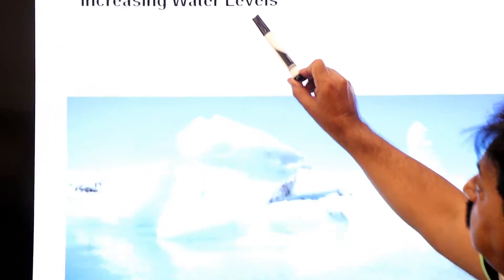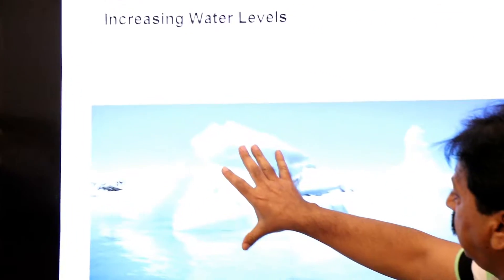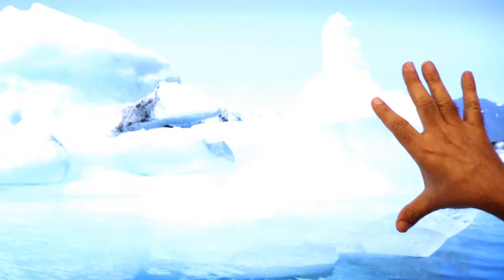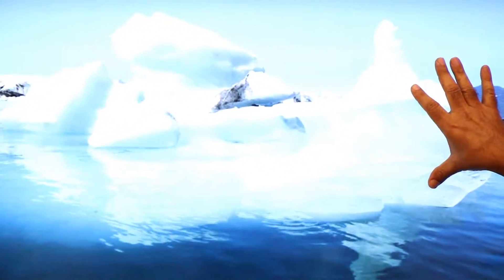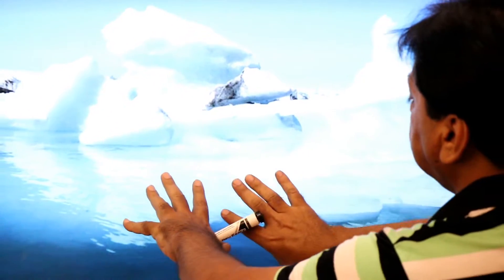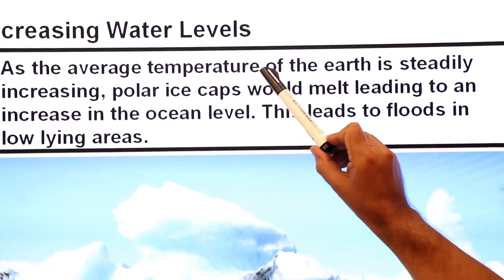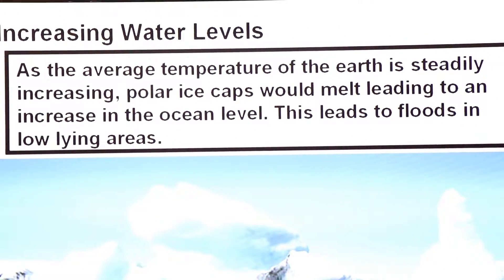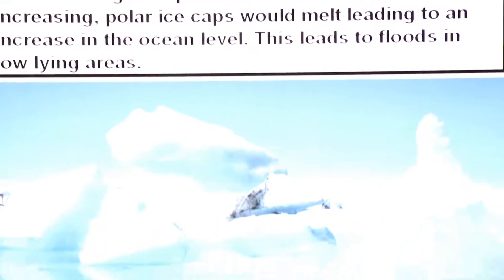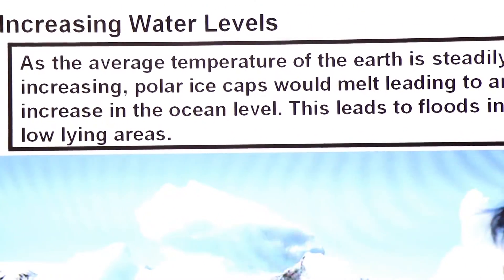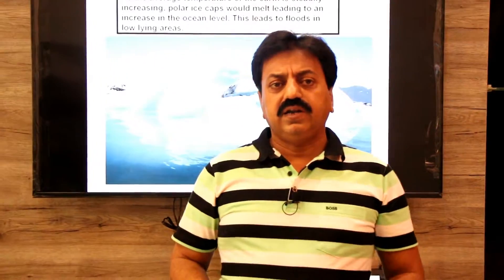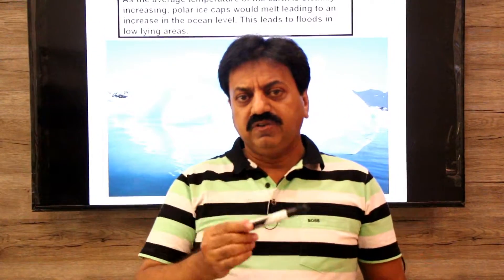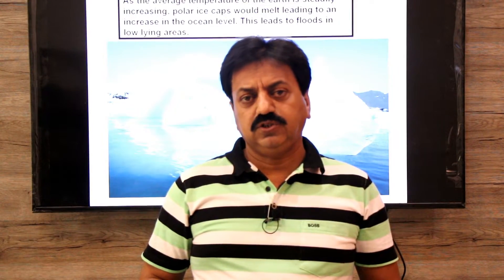The second disadvantage: water levels increase. As temperature rises due to global warming, glaciers melt, and that water flows into the sea, raising sea levels. As the average temperature of the earth steadily increases, polar ice caps melt, leading to an increase in ocean levels. This leads to floods in low-lying areas and cities near the ocean. In today's lecture we discussed the greenhouse effect. In the next lecture we will discuss acid rain. Thank you, dear students!